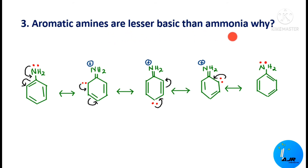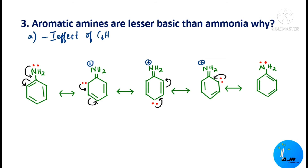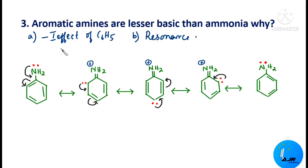The next very important question: aromatic amines are less basic than ammonia. Why? There are two reasons. The first reason is the minus I effect of the phenyl group, C₆H₅. The second is mainly due to the resonance effect. Minus I effect means electron-withdrawing effect, whereas plus I effect means electron-donating effect.